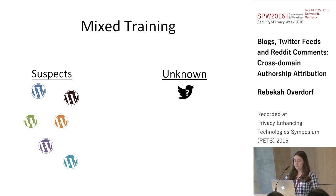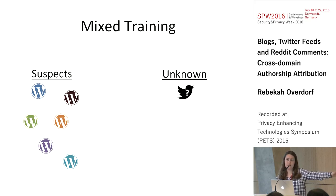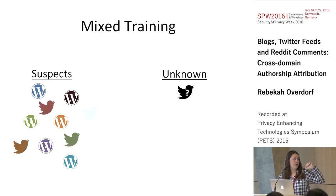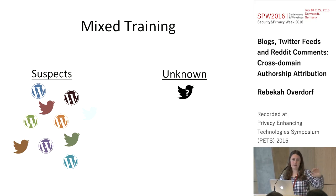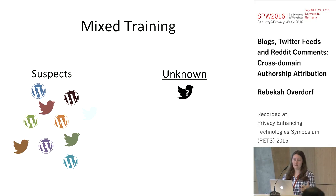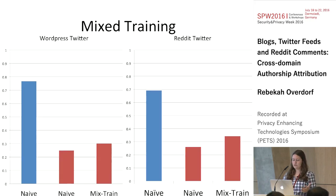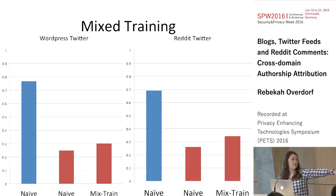Our first step in fixing this problem was through mixed training. In a normal setup, we have a group of suspects who are all bloggers and we want to connect them to an unknown Twitter account. We threw a bunch of other tweets not relevant to the suspect pool into the training, to teach the classifier about Twitter features versus WordPress features. We get a small jump in accuracy versus the naive method, but nothing fantastic.